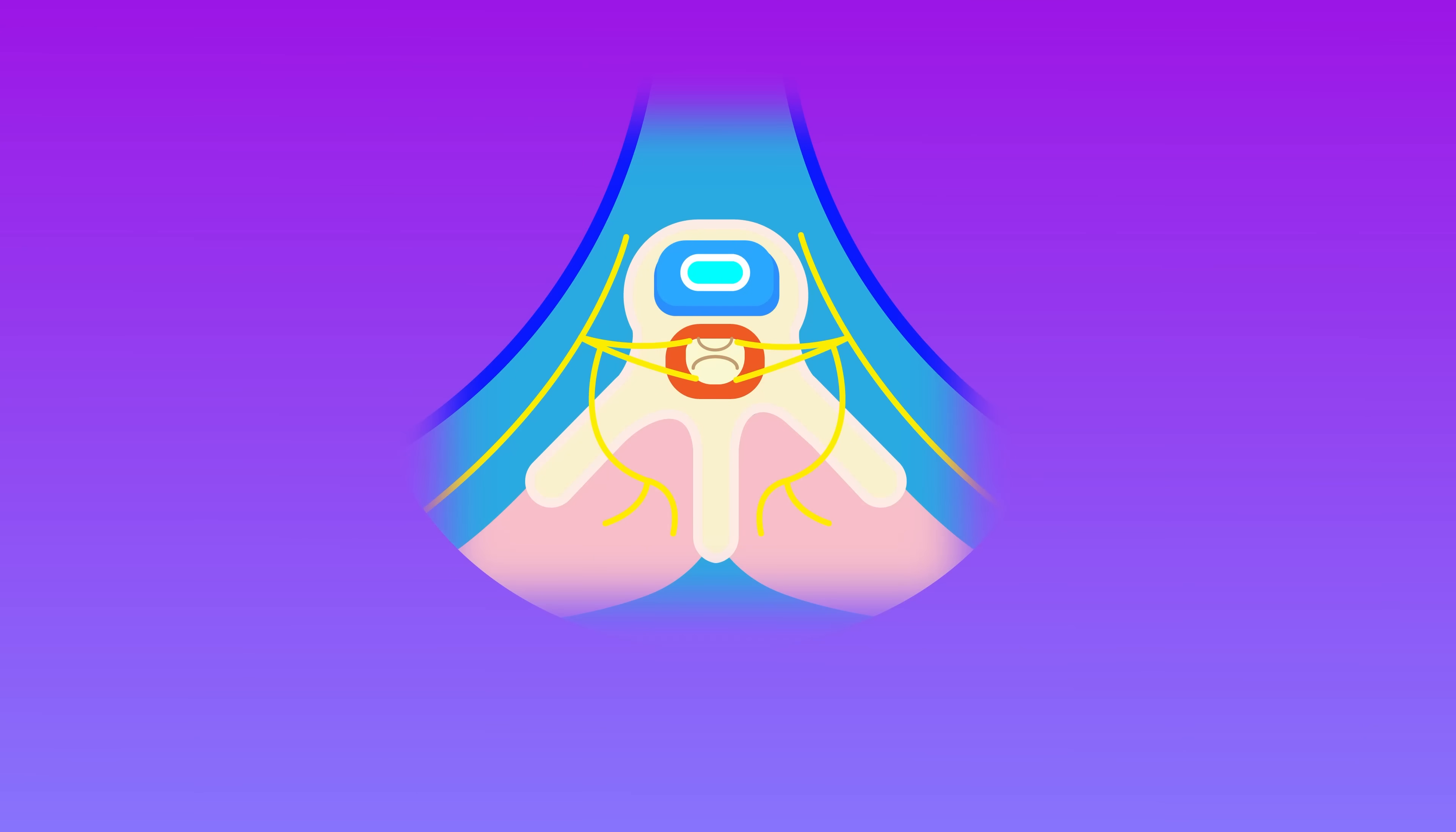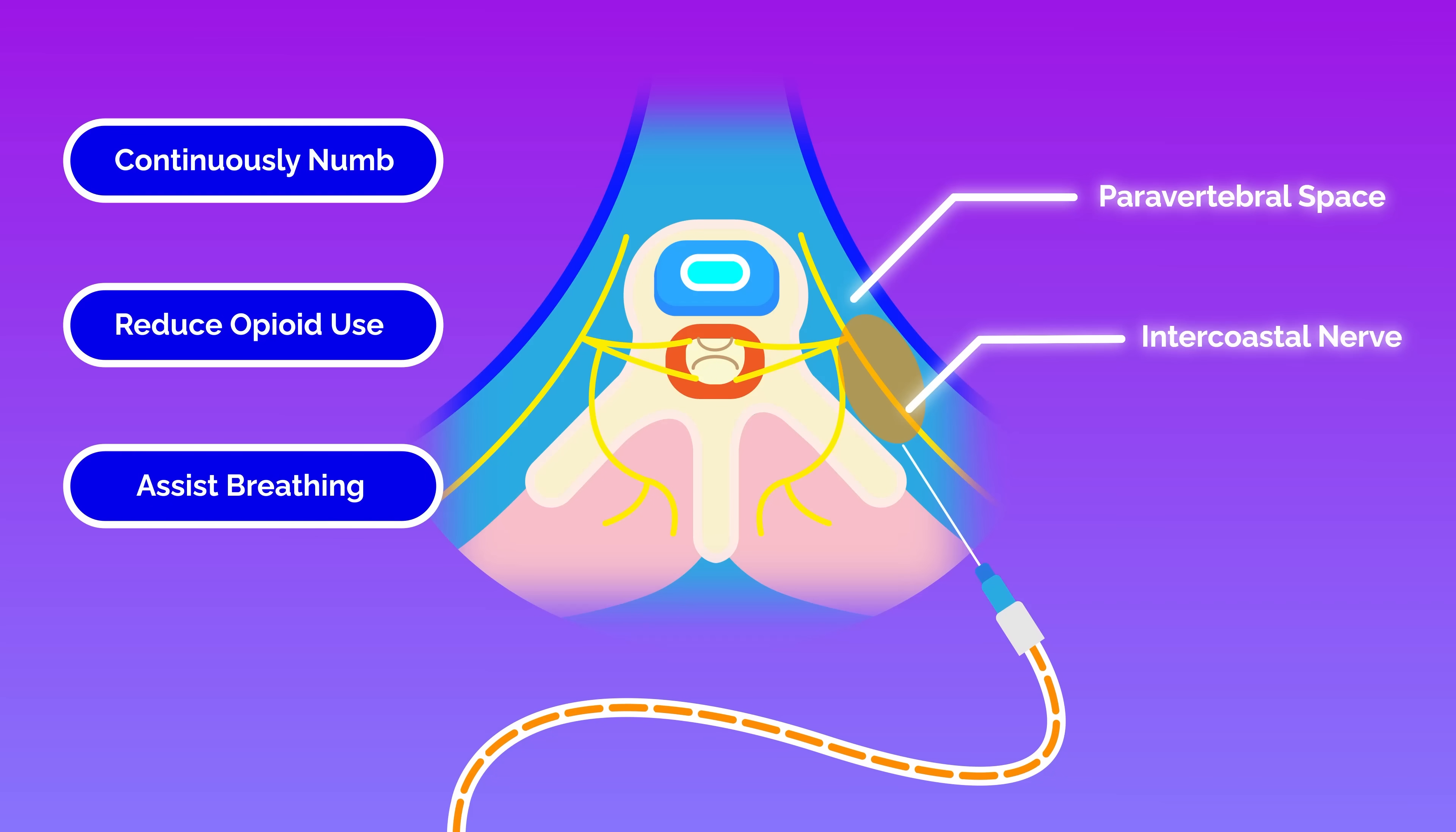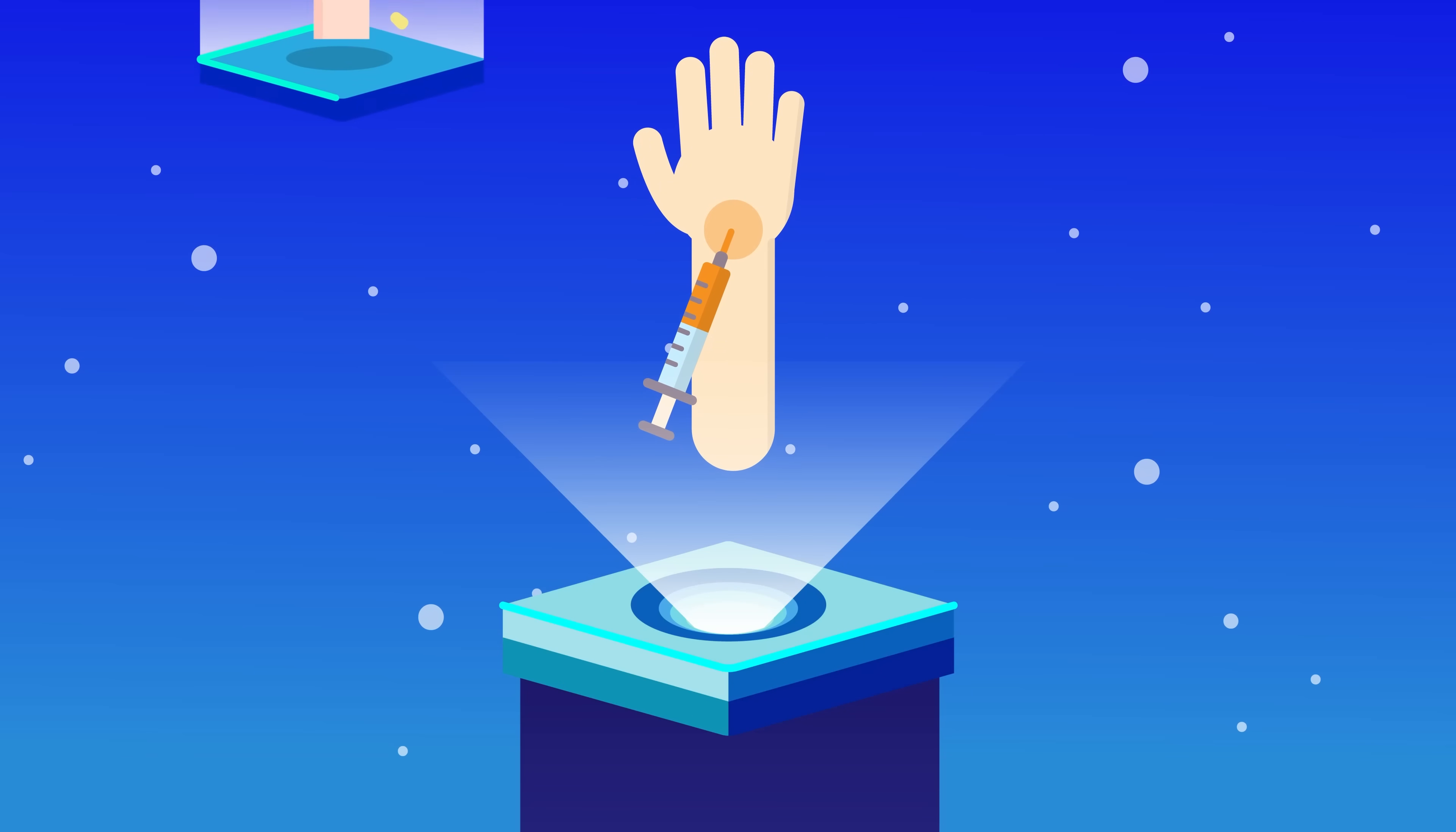This is where a regional anesthesiologist comes to the rescue. In this situation, they can place a continuous paravertebral catheter, a nerve catheter that's inserted along the spine to deliver local anesthetic near the intercostal nerves. It can continuously numb that specific region of the body for days, reduce overall opioid use, and help the patient breathe easier and recover faster. It's an extremely hands-on fellowship,